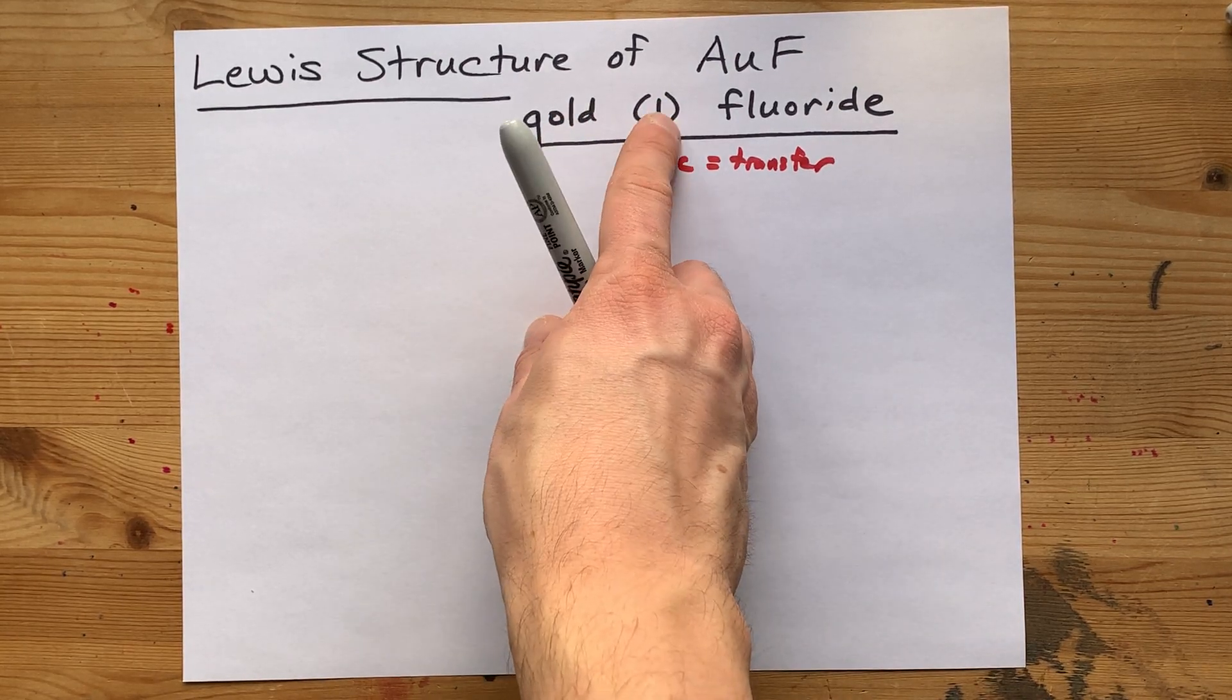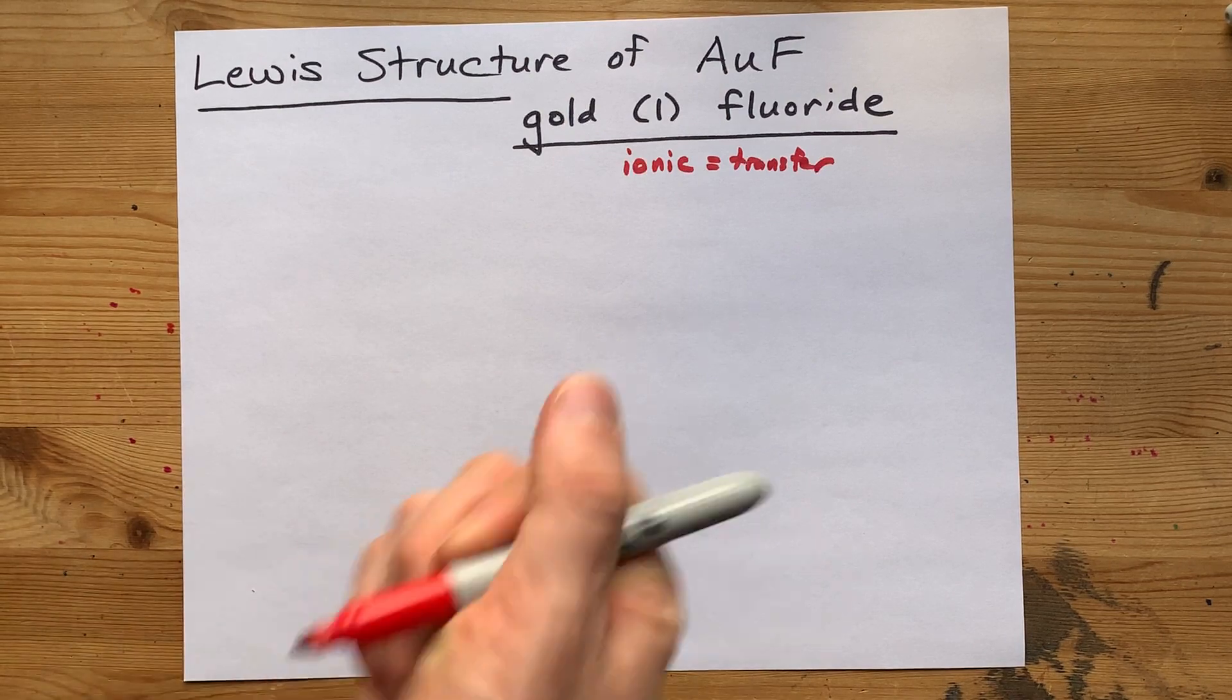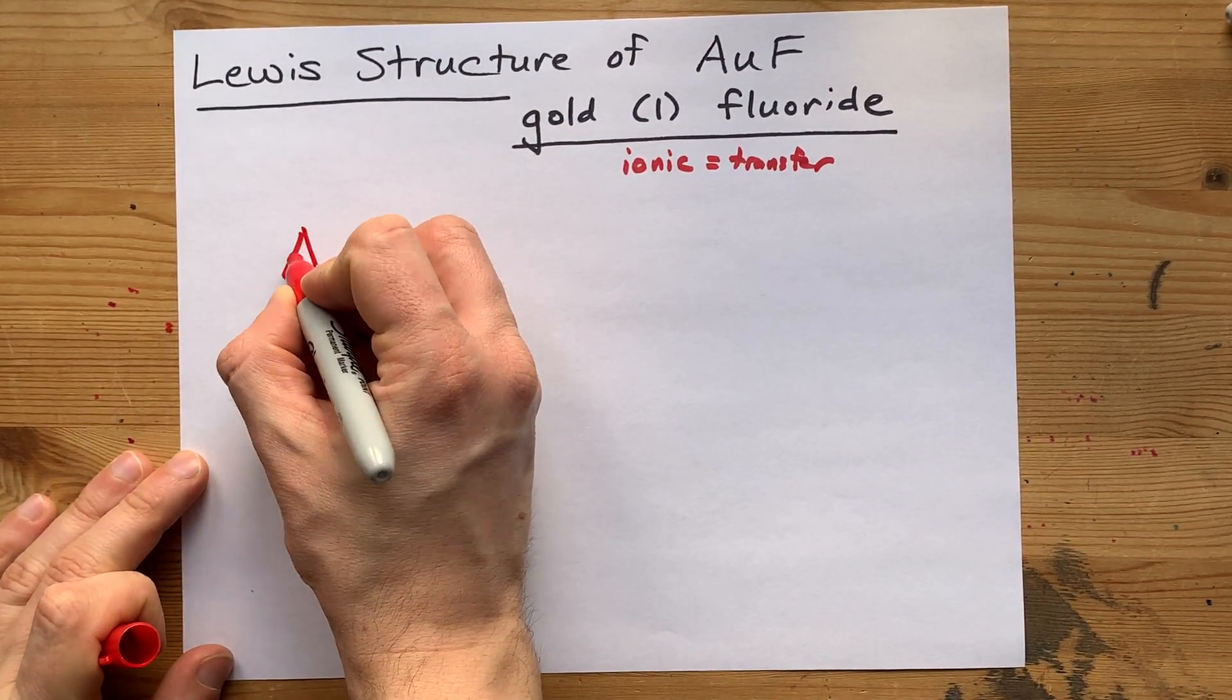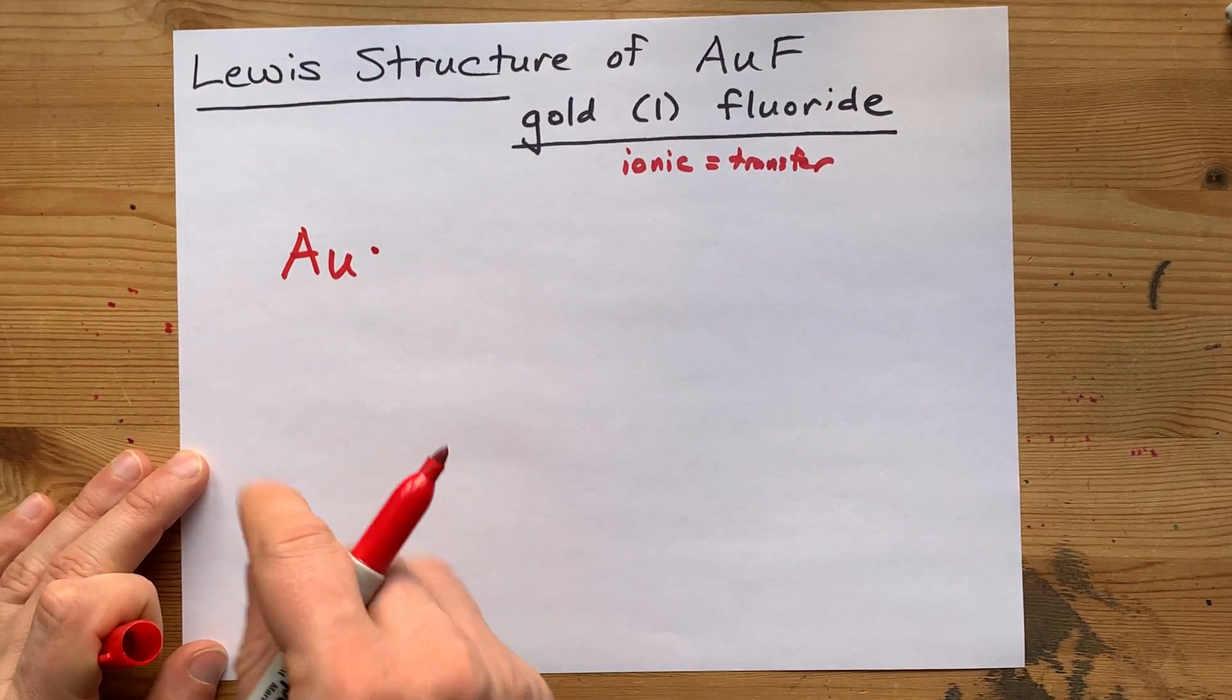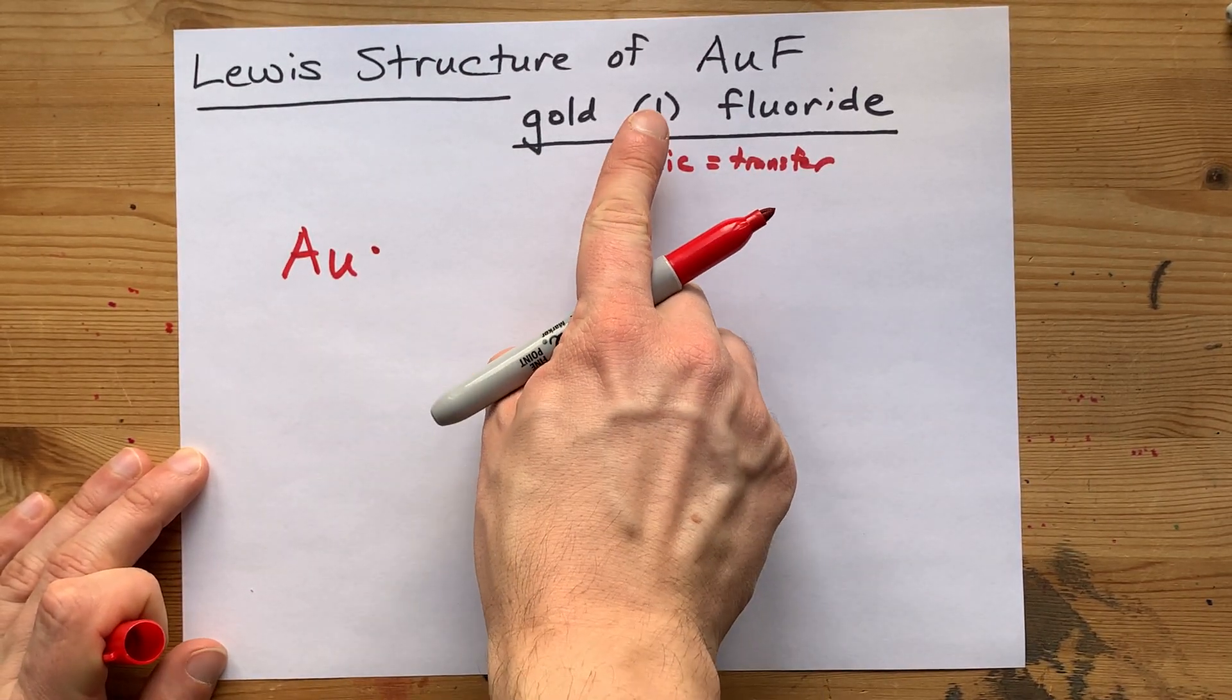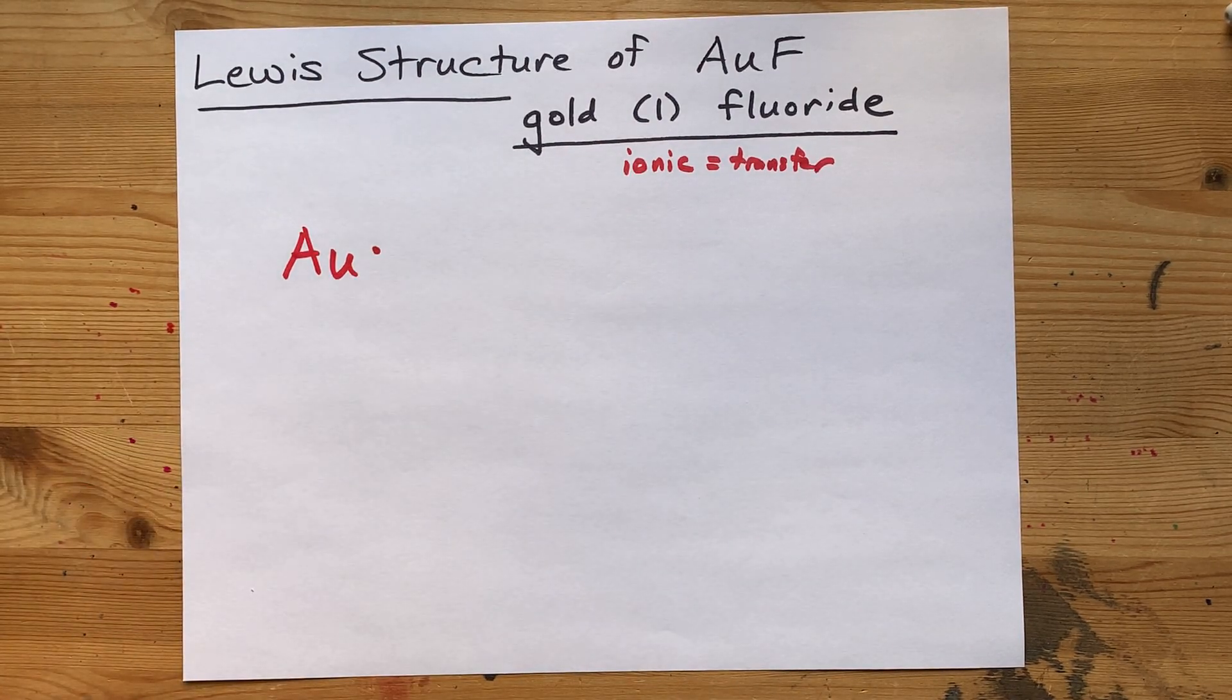In addition, there's also a one in the name in case you were asked about that. But, because gold wants a charge of plus one, what you're going to have to do to start with here is draw your gold atom with one valence electron. Whatever the charge is that you want is how many valence electrons you write there for yourself.